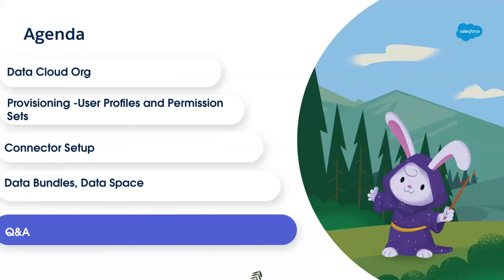Today's agenda is around data cloud setup. We will talk about where data cloud resides, how to do provisioning, and how to update your user profiles and permission sets to ensure you see the data cloud app with the right permissions given to the user. We'll also talk about out-of-the-box connectors that come with the product, and I want to show you in the tool where you can see these connectors for seamless integration. We'll touch upon data bundles and data spaces, and if time permits, we will go through Q&A as well.